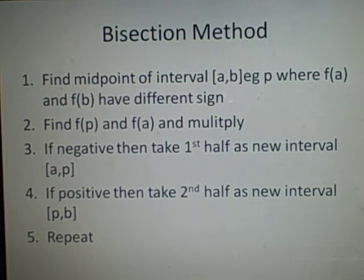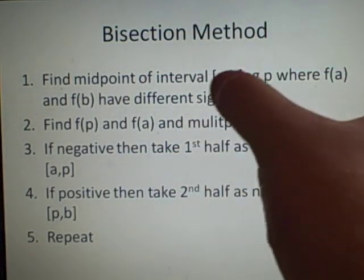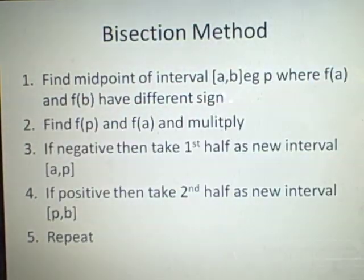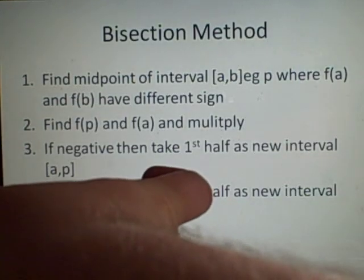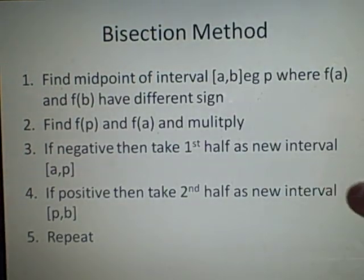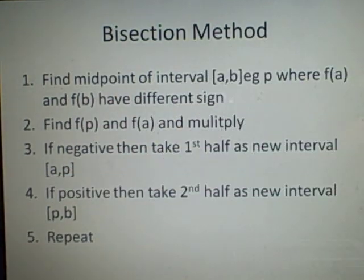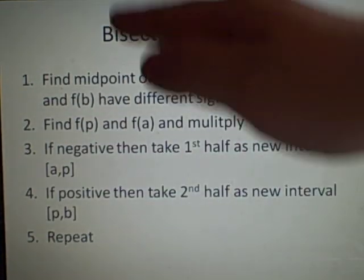So there must be a root there. To find it, we halve the interval. Say a was 1 and b was 3 — we find the halfway point which is 2 by adding and dividing by two. We find f(p) and f(a) and multiply them. If it's negative, we take the first half of the interval; if it's positive, we take the second half. This becomes our new interval and we carry on until we find enough significant figures.